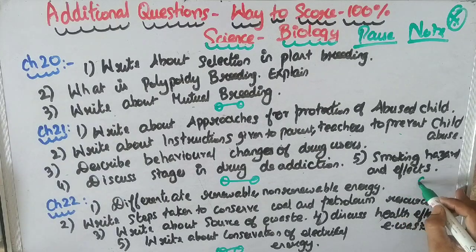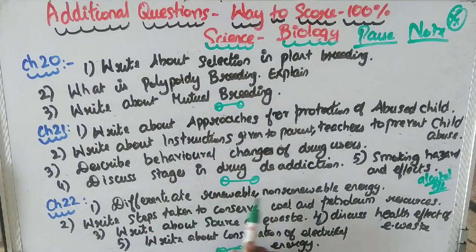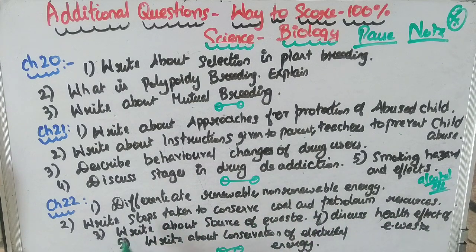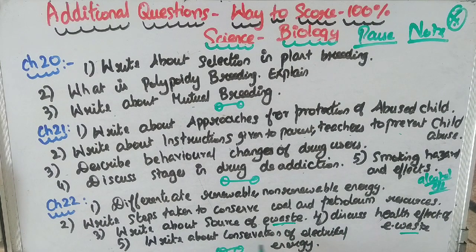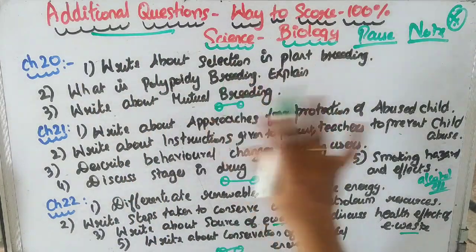Chapter 22: Question 11: Write the difference between renewable and non-renewable energy. Question 12: Write the steps taken to conserve coal and petroleum resources. Question 13: Write about the sources of e-waste. Question 14: Discuss the management of e-waste. Question 15: Describe water conservation and conservation of electrical energy.